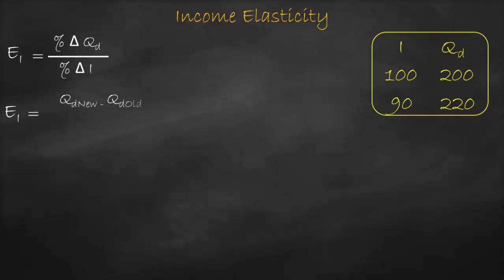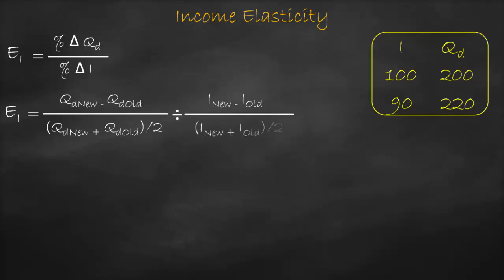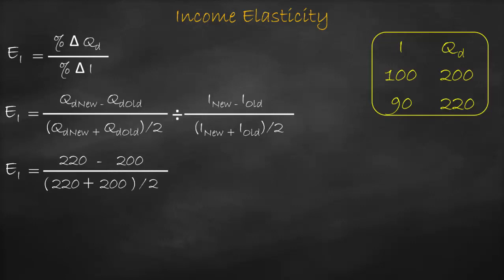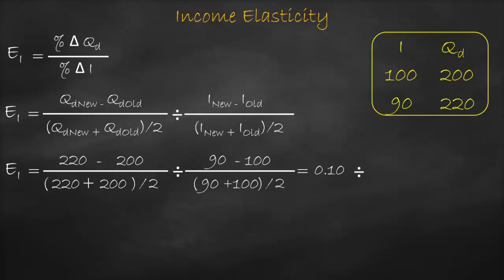We use the midpoint formula: new quantity demanded minus old quantity demanded, divided by the average of quantity demands, divided by new income minus old income, divided by average incomes. Substituting: 220 minus 200 divided by (220 plus 200) divided by 2, divided by new income 90 minus old income 100, divided by (90 plus 100) divided by 2. This gives us 0.10 divided by negative 0.11.